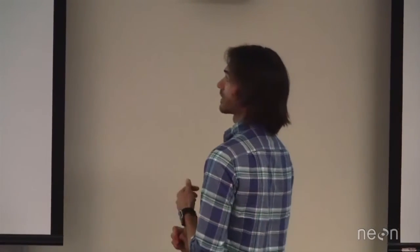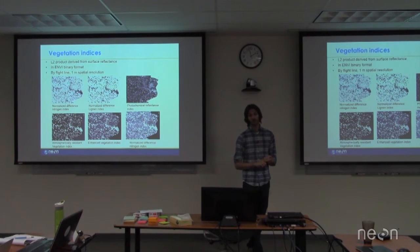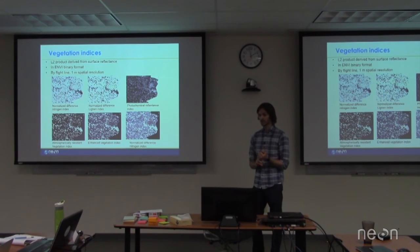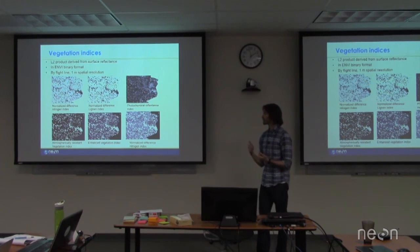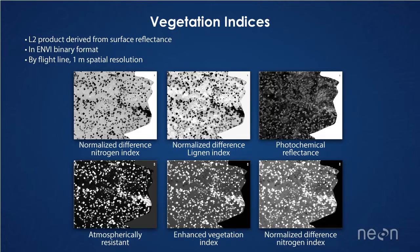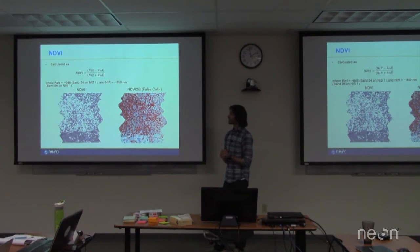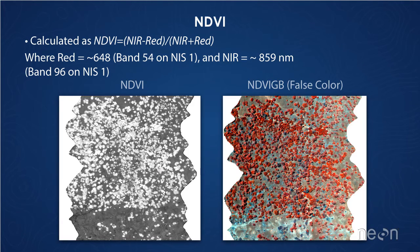So once we get the reflectance, we also create vegetation indices. This is an L2 product derived from the surface reflectance. Currently, we're delivering in Envy binary format. We've just switched over to be delivering this in GeoTIFF. It's also by flight line at one meter spatial resolution. You can see here's a bunch of different examples from an area also in San Joaquin. I just want to highlight the first one, Normalized Difference Vegetation Index, NDVI. It's a very popular vegetation index. This is the only equation I put in here I'll promise. NDVI is near-infrared minus red over near-infrared plus red.